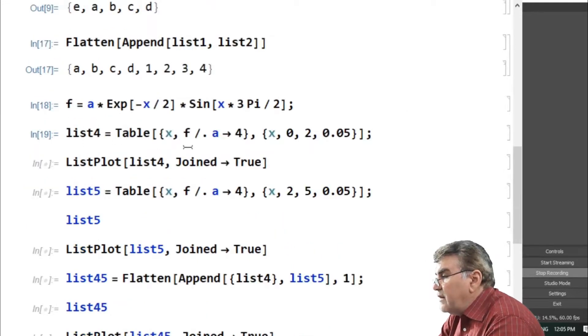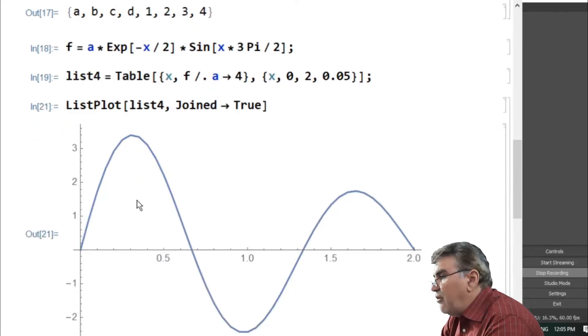If I run this out by using the command ListPlot, I'll get a plot of the form. You see it varies from 0 to 2.